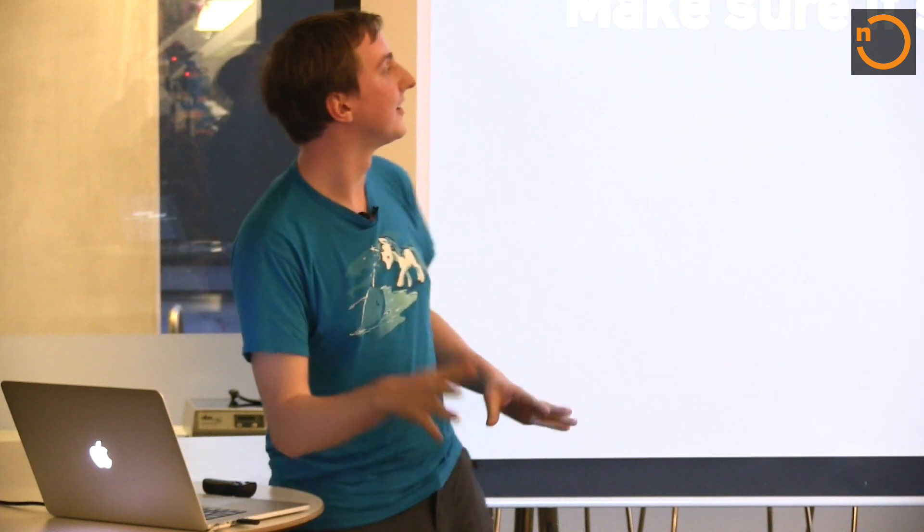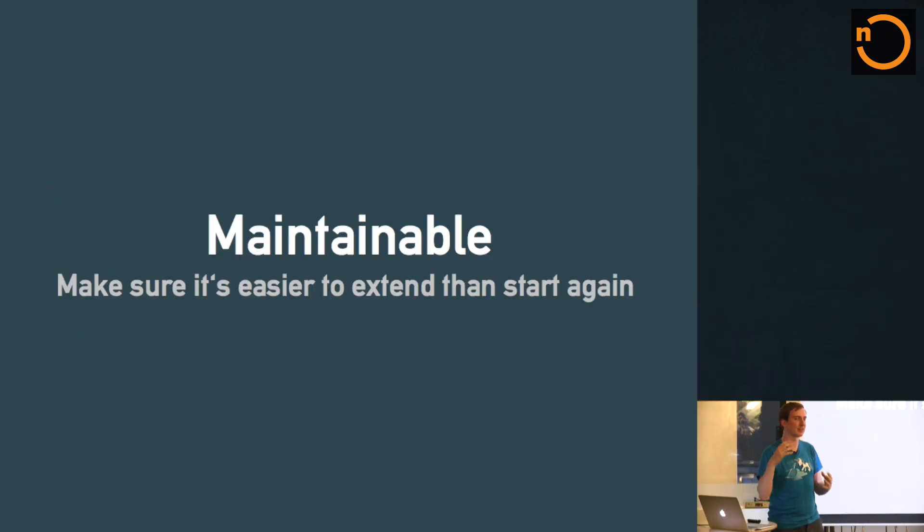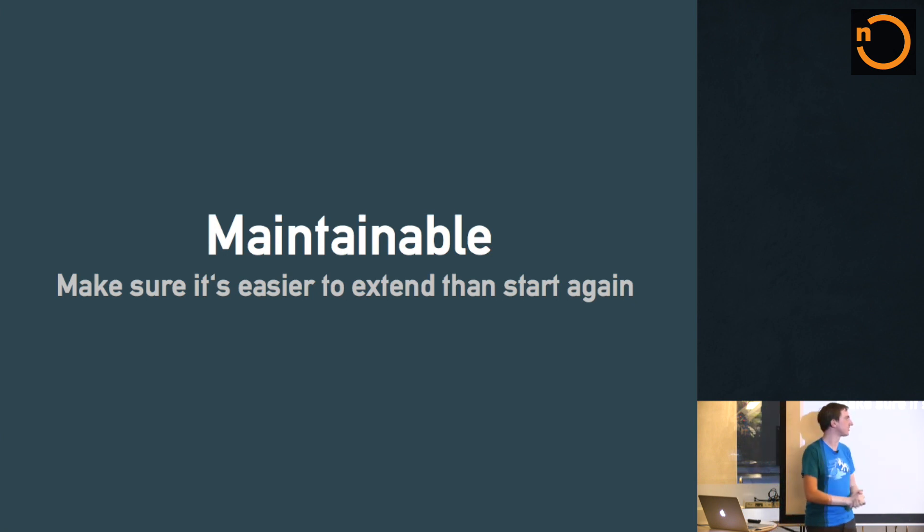One of the most difficult things about writing code in a big company is making it easier to extend and to throw away and start again. A big part of API code is making it so that if a developer on one of our many product-focused teams — say the organizer acquisition team — needs to add an API endpoint, they can easily find the right piece of code, and it takes 10 or 20 minutes. If it's a massive task to add a new endpoint, they're just not going to get added. We need a very easy, low barrier of entry.